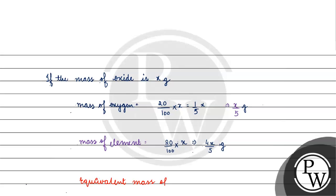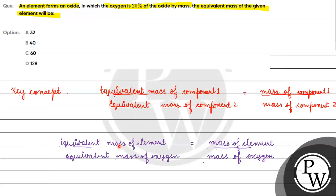The equivalent mass of oxygen — equivalent mass is basically equal to atomic mass of oxygen divided by n-factor. Since oxygen exists in oxide form with a charge of 2, the equivalent mass of oxygen is 8 grams per equivalent. We have 4x/5 for the element and x/5 for oxygen, so the calculation gives us 8 times 4, which equals 32 grams per equivalent.